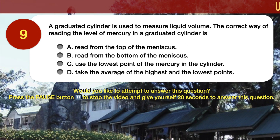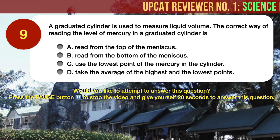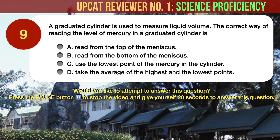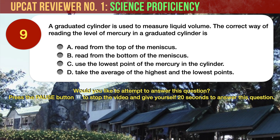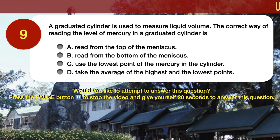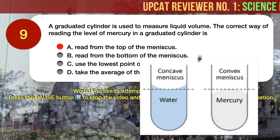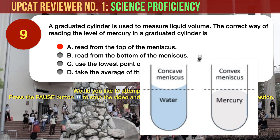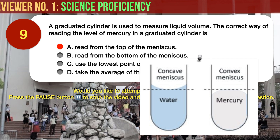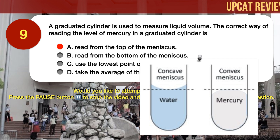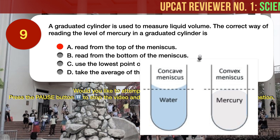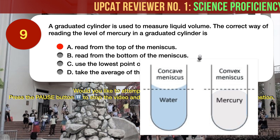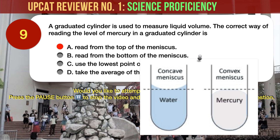Question number 9. A graduated cylinder is used to measure liquid volume. The correct way of reading the level of mercury in a graduated cylinder is: A. Read from the top of the meniscus. B. Read from the bottom of the meniscus. C. Use the lowest point of the mercury in the cylinder. D. Take the average of the highest and the lowest points. The correct answer is A: read from the top of the meniscus. When measuring liquids using a graduated cylinder, place it on a flat surface and view the height of the liquid with your eyes directly level with the liquid. The liquid will tend to curve downward — this curve is called the meniscus. The convention is to always read the measurement at the bottom of the meniscus. In the case of mercury, however, you need to measure from the top of the mercury column, the flat area of the mercury, and ignore the lower level along the perimeter where mercury is repelled by the glass.